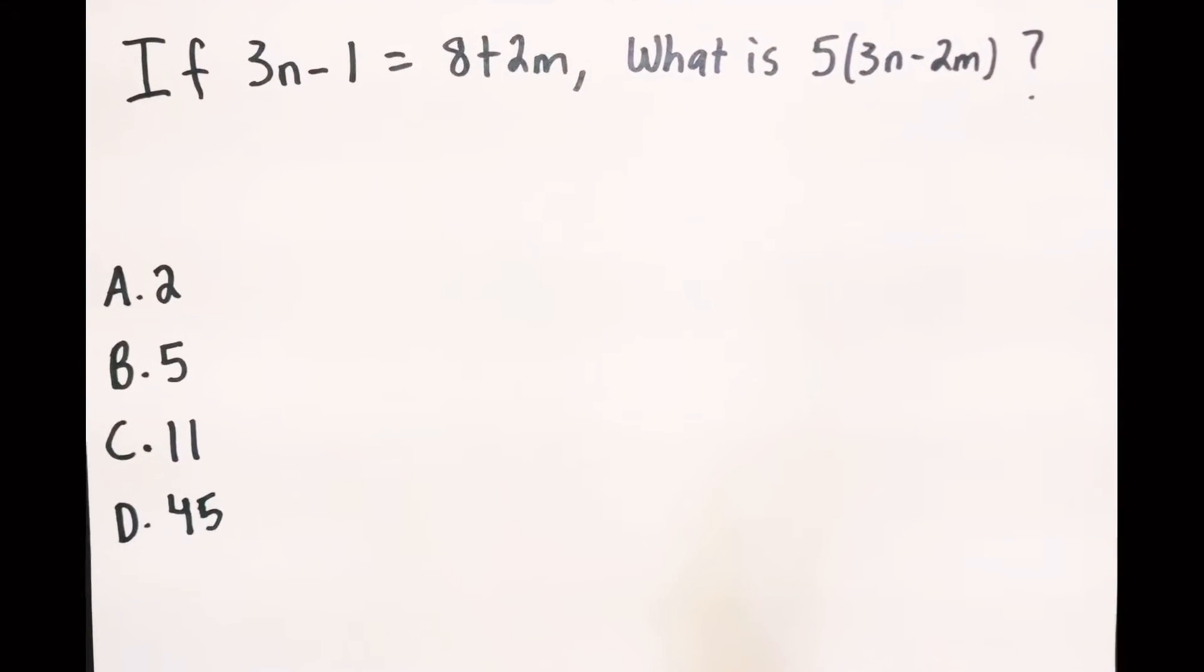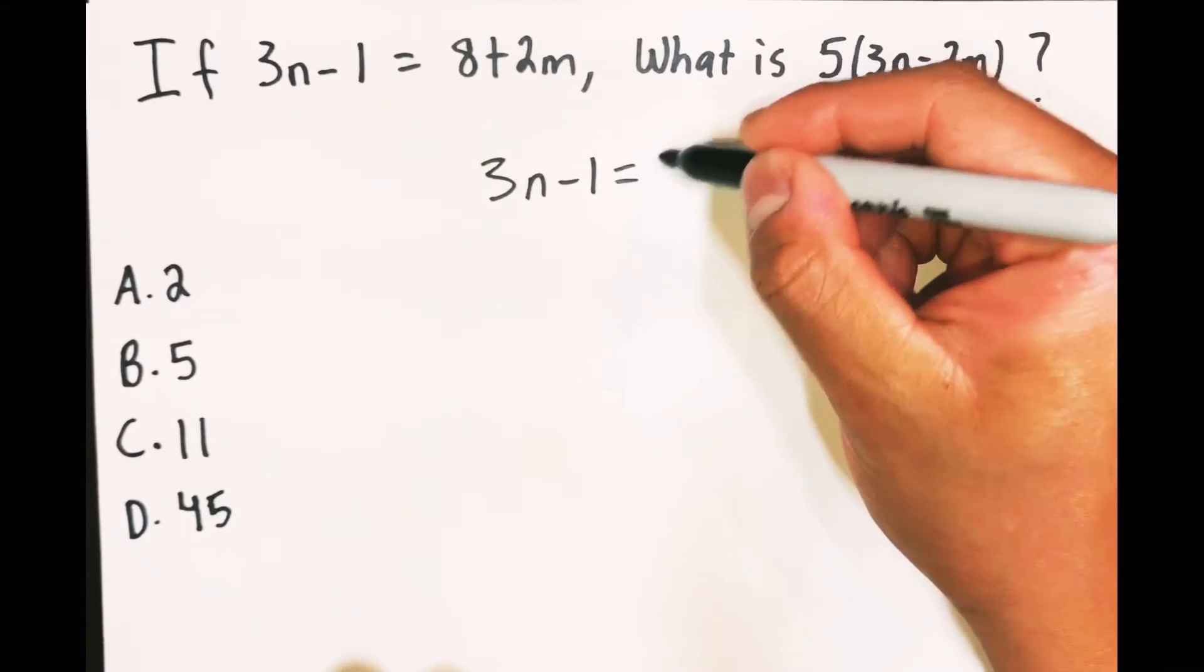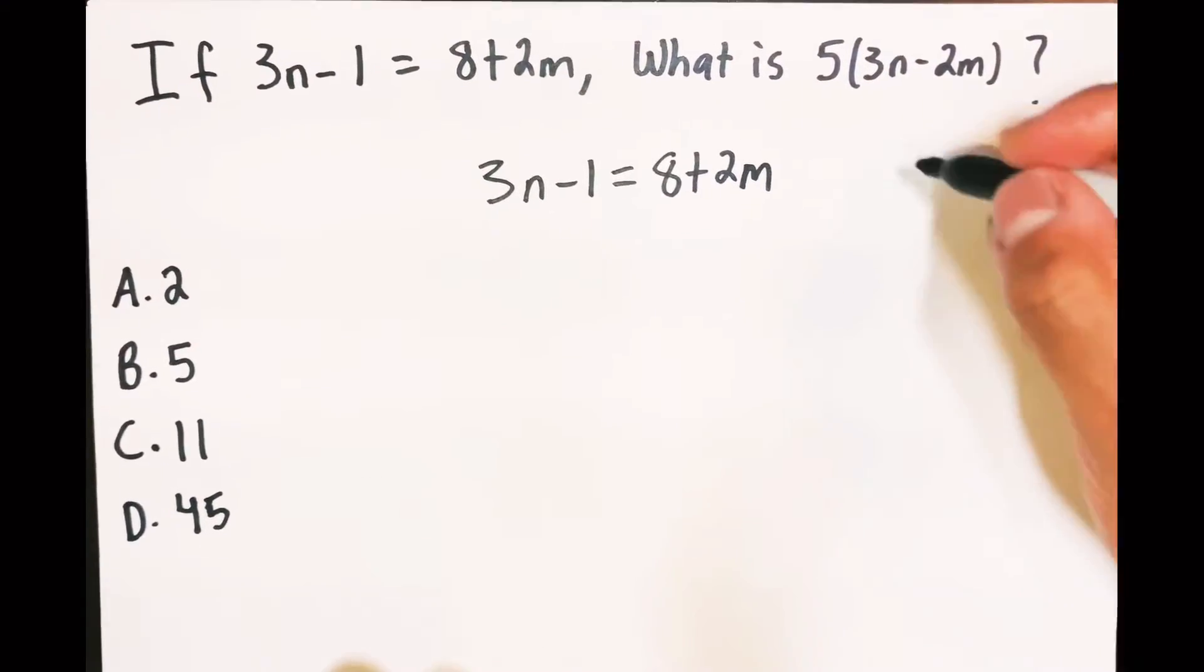Alright, so what we're going to do here is let's just write it again. We're going to have 3n minus 1 equals 8 plus 2m, and they're saying what is that?